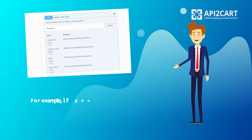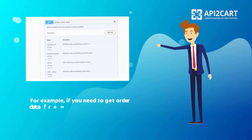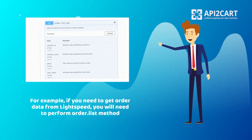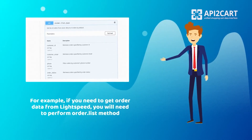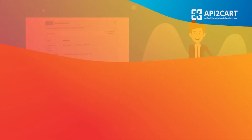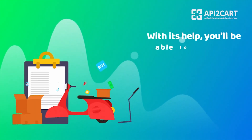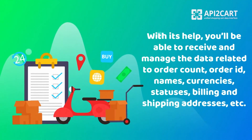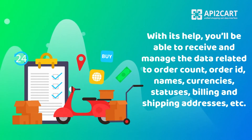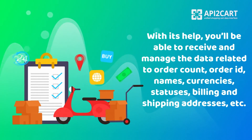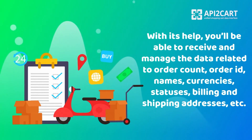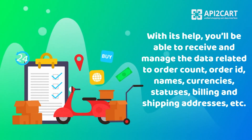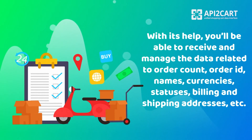For example, if you need to get order data from Lightspeed, you will need to perform the order list method provided by API2Cart. With its help, you'll be able to receive and manage the data related to order count, order ID, order names, currencies, statuses, billing and shipping addresses, etc.